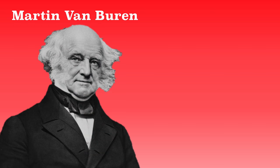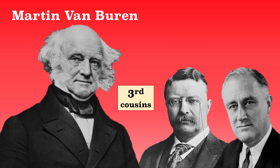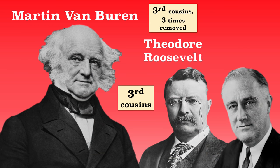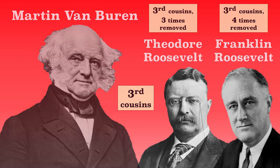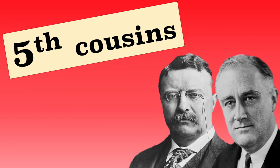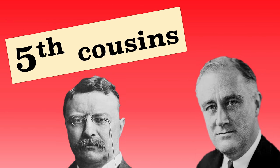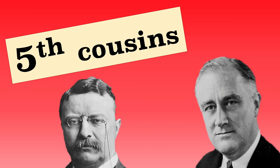Here's one you probably didn't see coming. Martin Van Buren, the eighth president, is third cousins with two other presidents — he's third cousins three times removed with Theodore Roosevelt, and third cousins four times removed with Franklin Roosevelt. Speaking of the two Roosevelt presidents, they are both fifth cousins, so maybe not as close as you'd think.